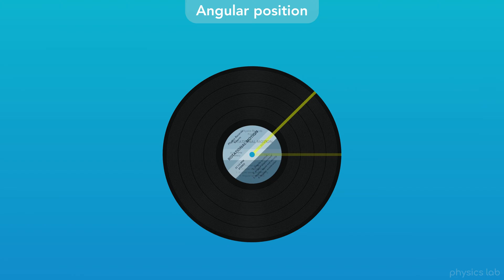How can we describe these two positions? We can see that the record and the line rotated, and there's an angle between the line at the first position and the line at the second position. In this case, the angle between these two lines is 45 degrees. For rotational motion, we're going to use angles to describe how an object is moving, which is why we call this the angular position, and we're using the angular description of motion.